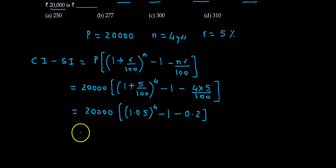This comes to 310.125. So the closest answer is 310. So approximately we can take this as 310, which is option D.